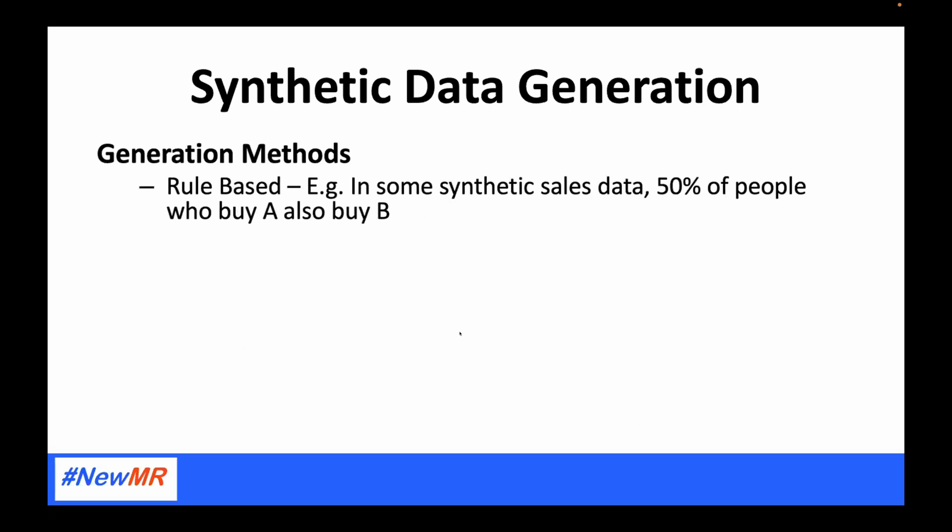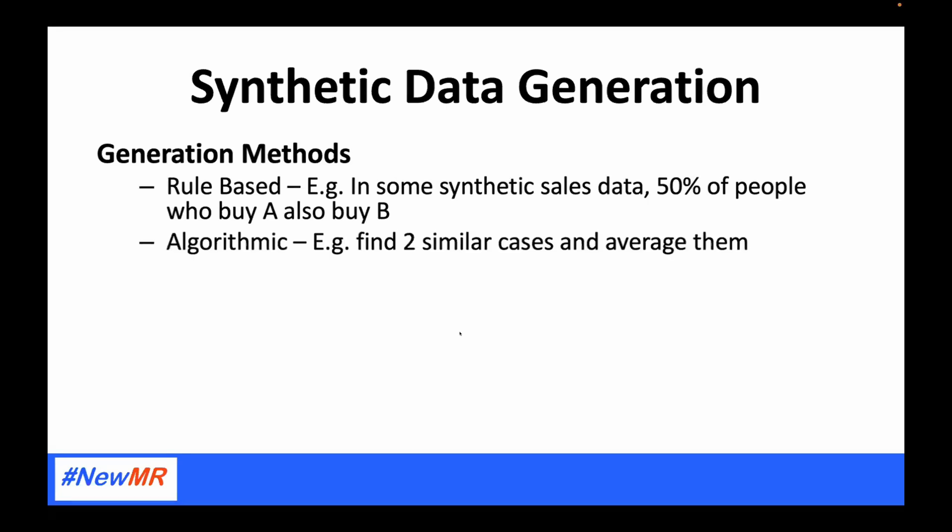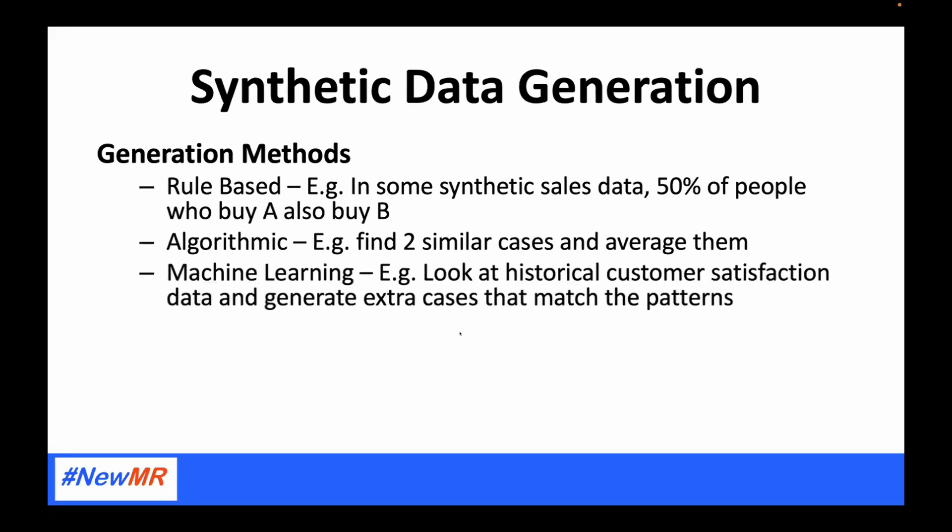We need to think about how synthetic data is generated. The first way is rules-based — you might try to model shopping or travel behavior by setting up rules, such as '50% of people who buy A also buy B,' and apply that to a market simulator. Algorithmic approaches are used a lot; there's a technique called SMOTE which creates synthetic people to compensate for under-sampling. It finds a random case, finds a match for it, and averages them out to make a new case.